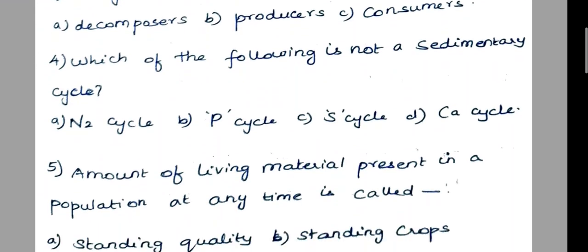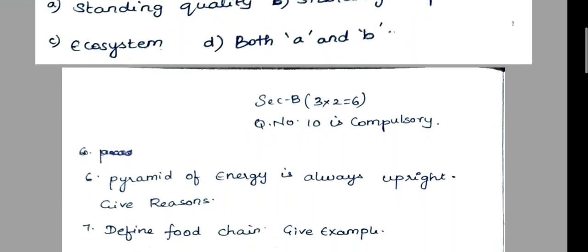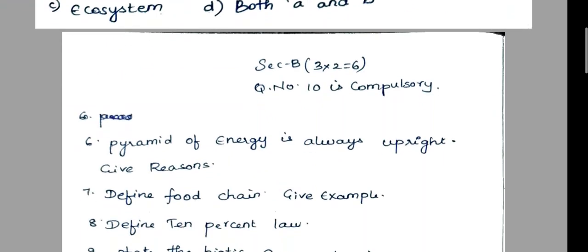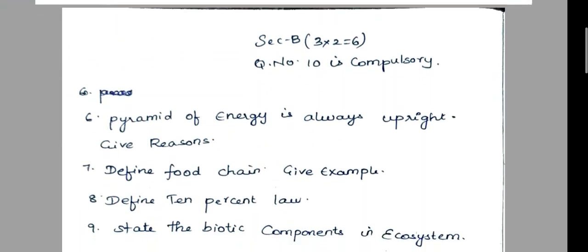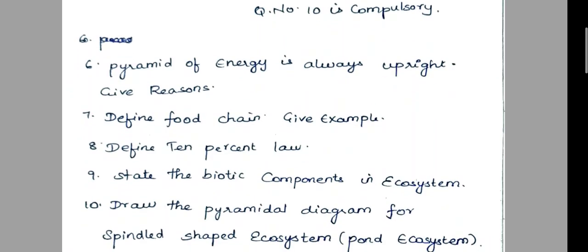So Section B, we have 2 marks. So 5 is another 3. So question 6: pyramid of energies always operates — give reason.